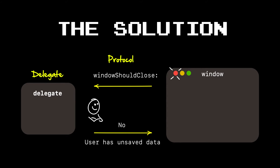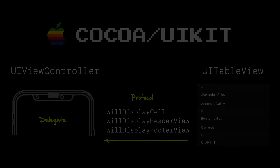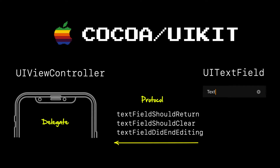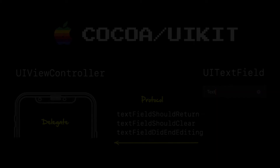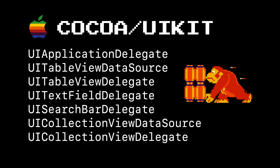This pattern of protocol and delegation is used all over the Apple ecosystem. This is how UI table views tell our view controllers when it's safe to display cells, headers, and footers. It's how our text field works — that's how it tells us when it's safe to return, clear, or edit a text field. It's used in countless other libraries throughout Cocoa and UIKit. If you see the words delegates or data sources, you know you're dealing with a protocol delegate pattern.